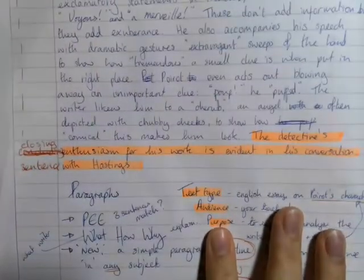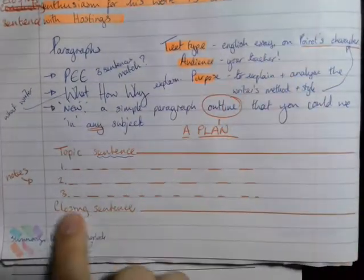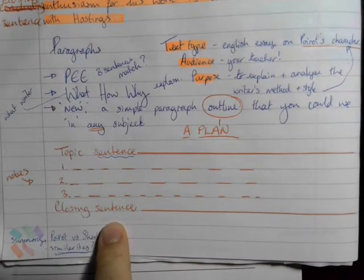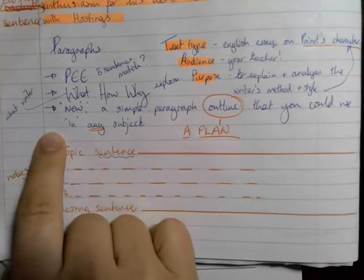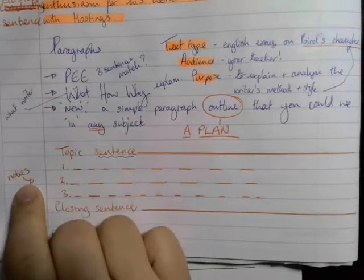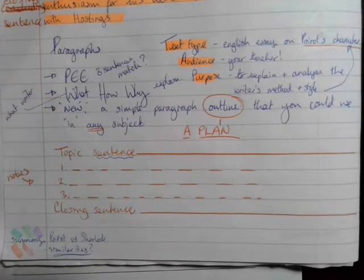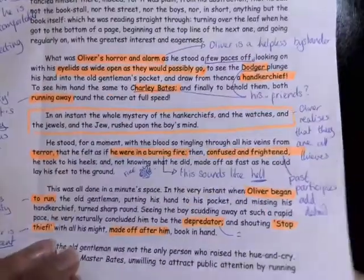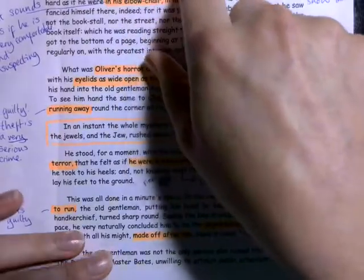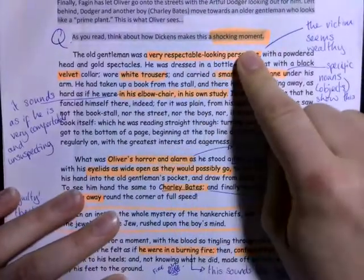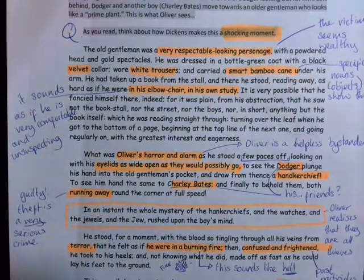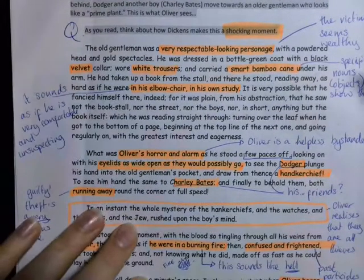Then the closing sentence again makes sense on its own. If you read it, it should actually mirror your topic. So it's not dissimilar to the PEE but it's actually less specific and it means that you have to do a bit more thinking. So our overall topic in this lesson is how Dickens makes this a shocking moment.